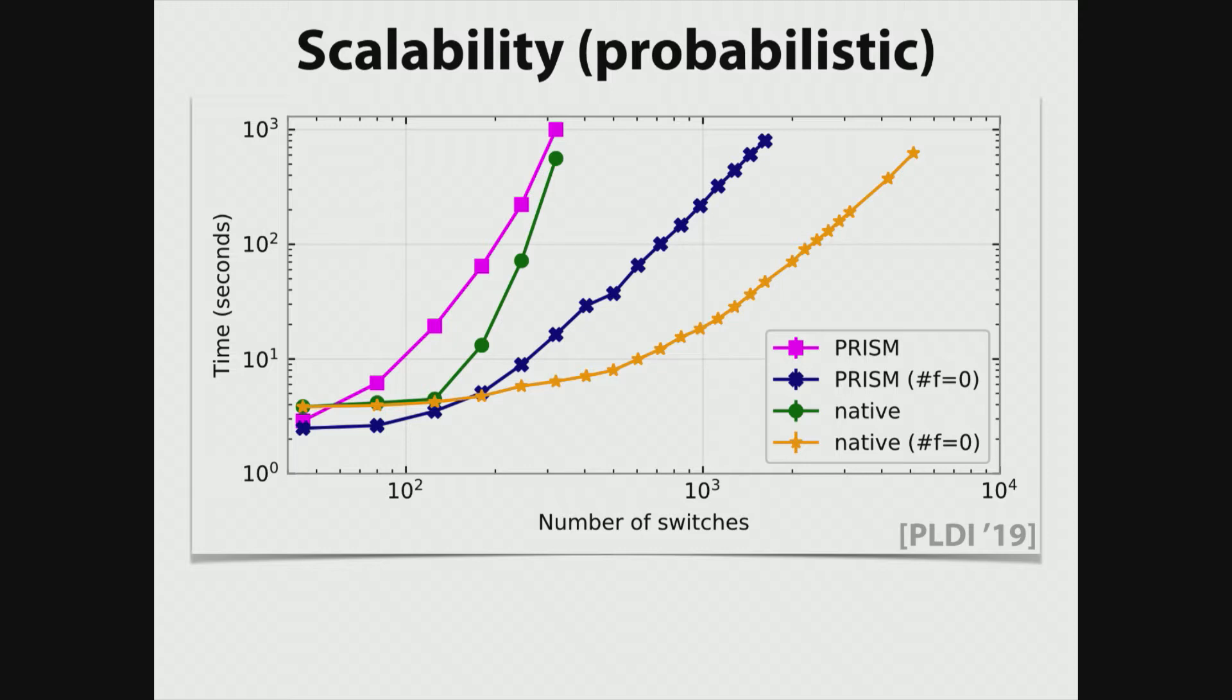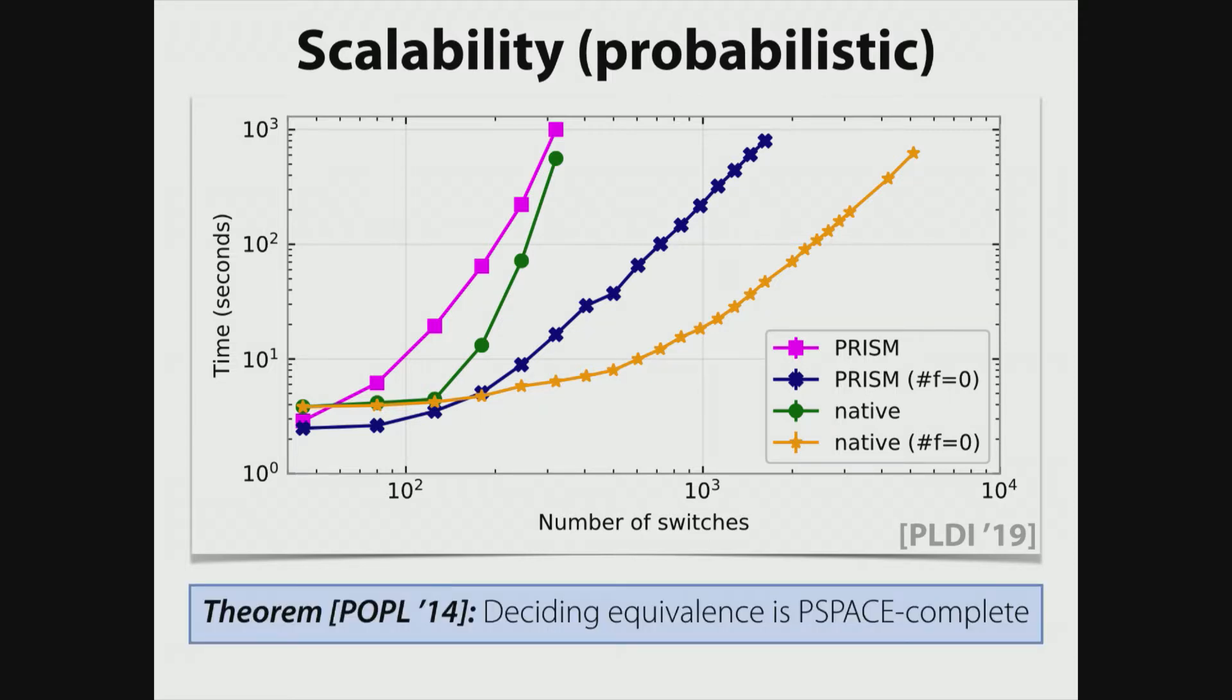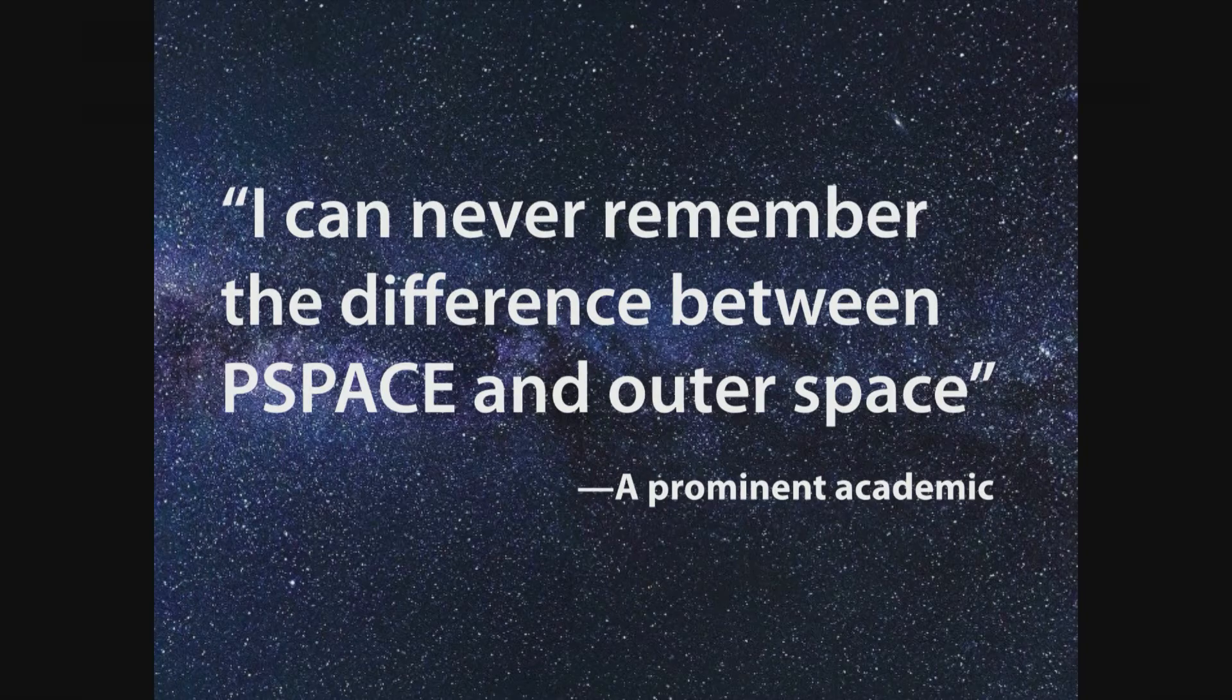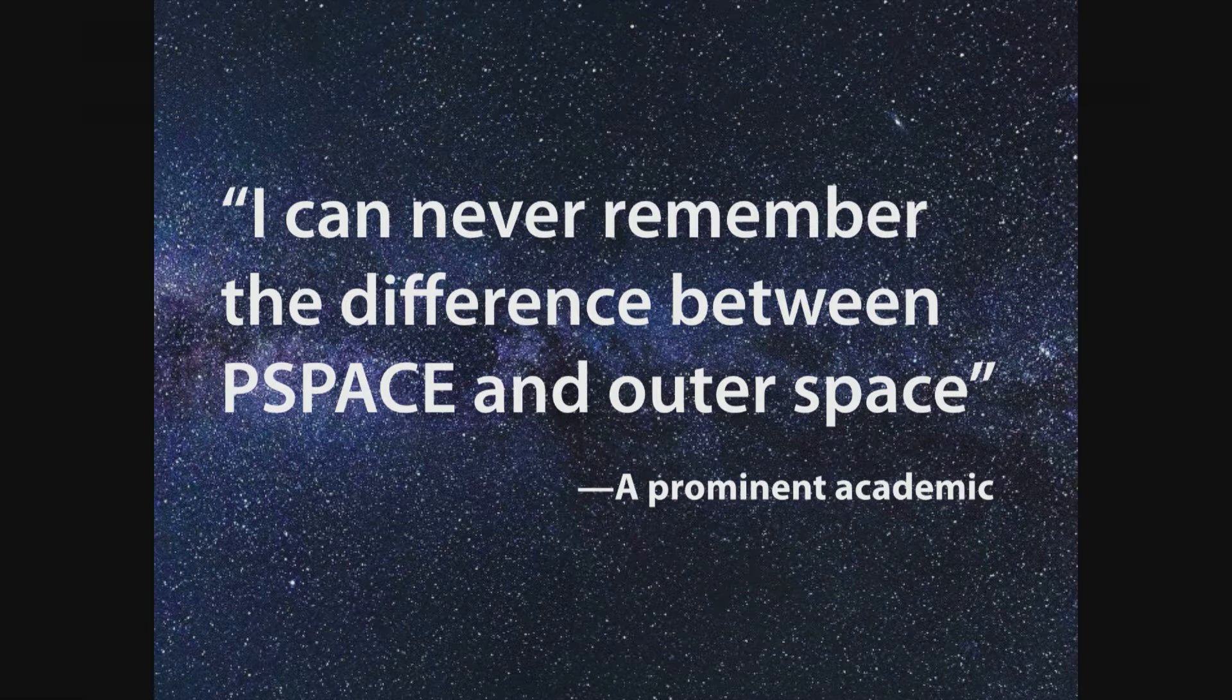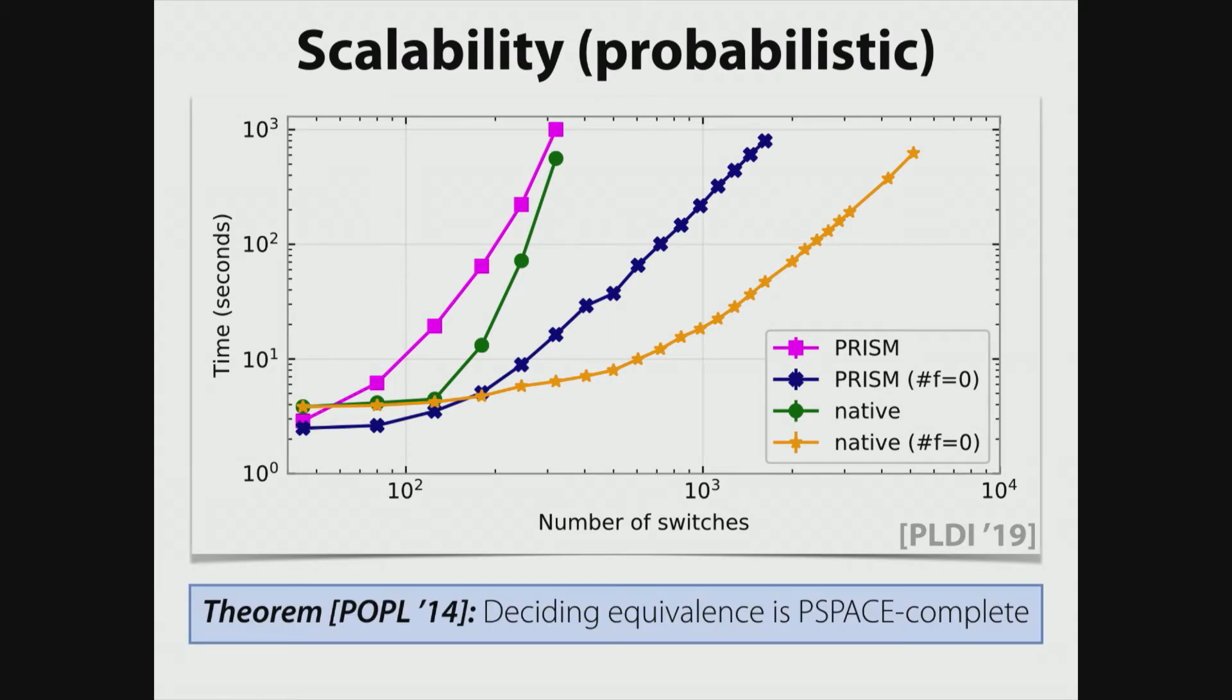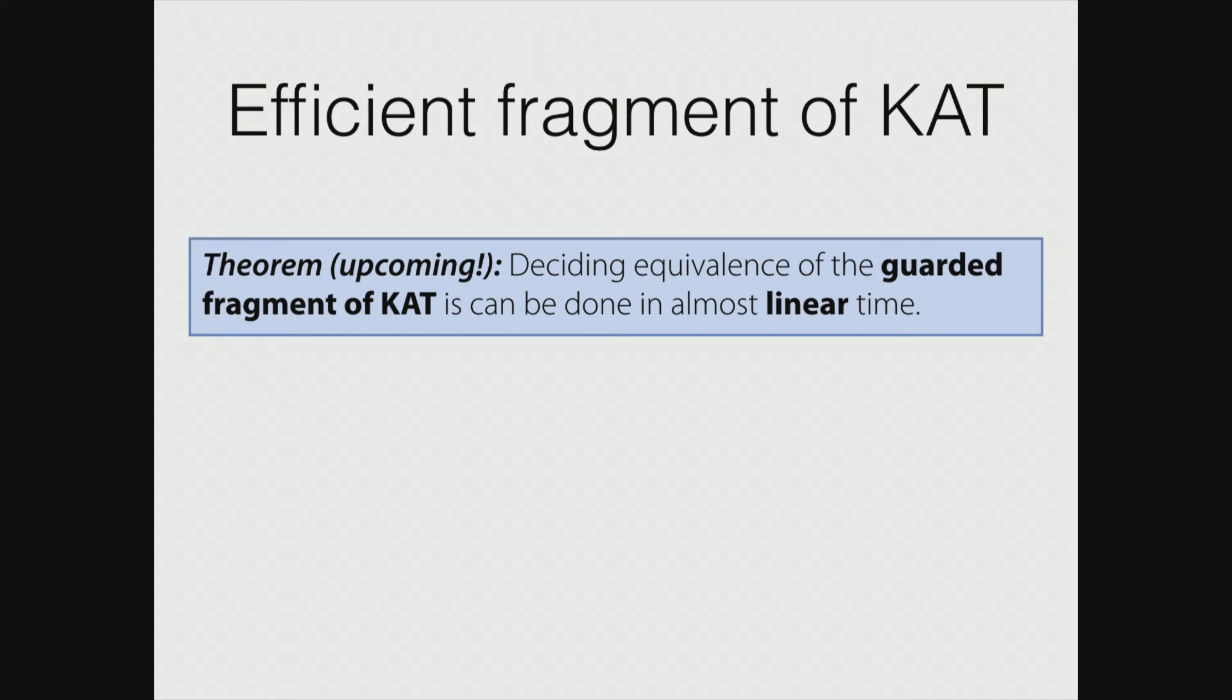And this came to as a surprise to us. And we thought for a while there was a bug in the implementation. Because back in 2014, we had a theorem saying that equivalence in our language was P-space complete. And P-space complete is bad. There's a famous quote by a prominent academic. You can never remember the difference between P-space and outer space. So we were a bit surprised by the fact that the implementation seemed to scale so well. And we puzzled about it for a couple of years. And recently we discovered, and this is an upcoming theorem, that deciding equivalence can be done in almost linear time.